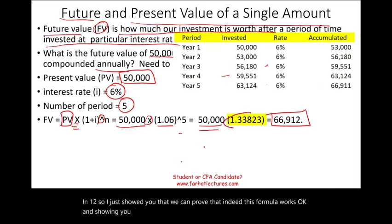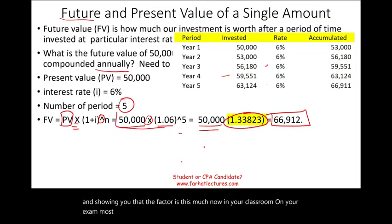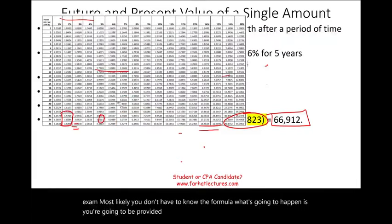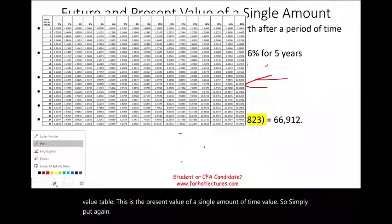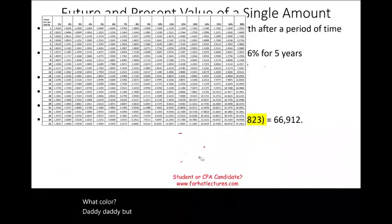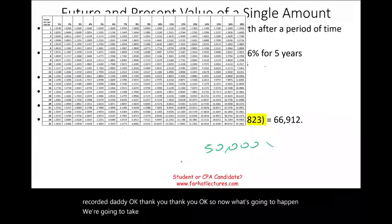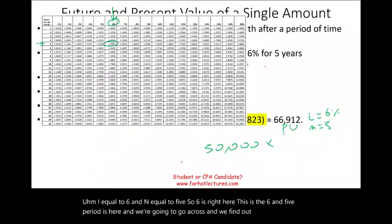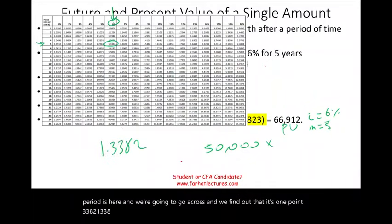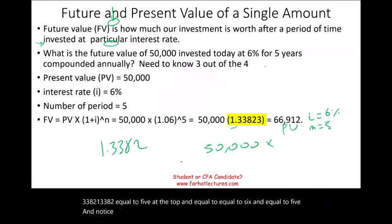In your classroom or on your exam, most likely you won't need to use the formula — you'll be provided with a time value table. Using the future value table of a single amount, you find the factor at i = 6% and n = 5, which is 1.3382. This is the same factor we computed with the formula.